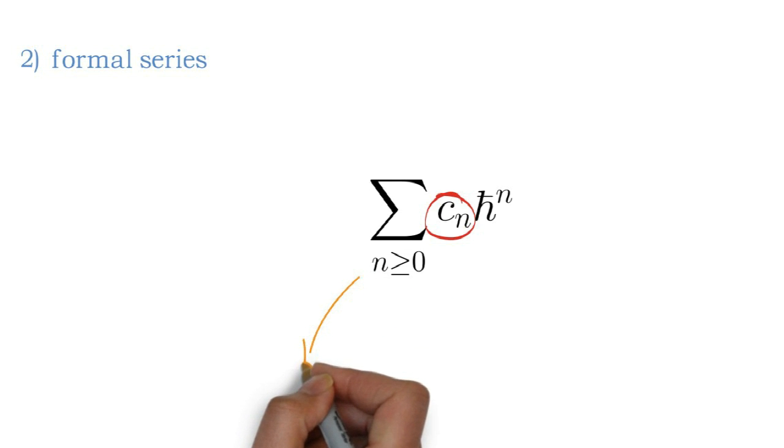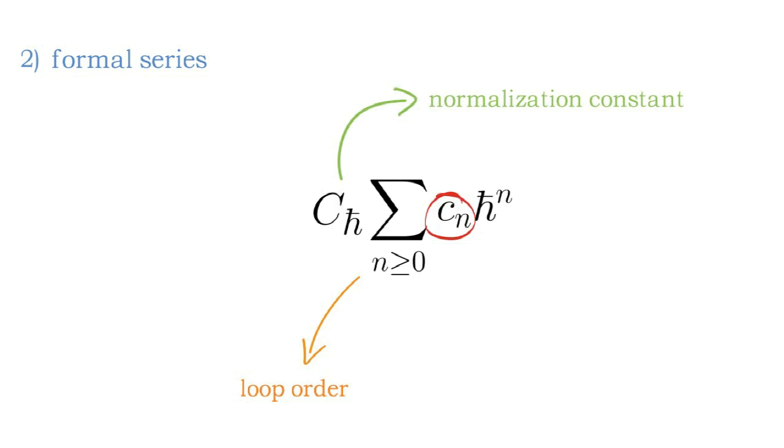The second important feature of the Feynman diagram expansion is that it produces a purely formal series in a coupling constant. The individual coefficients of the series are well defined, but the entire series as a whole need not converge. In other words, the series only needs to make sense order by order in the coupling constant h-bar, where the integer n keeps track of the order, also called the loop order. We might also have a normalization constant, which is a half-integer power of h-bar, depending on how we normalized our integrals occurring in the Wick rule.